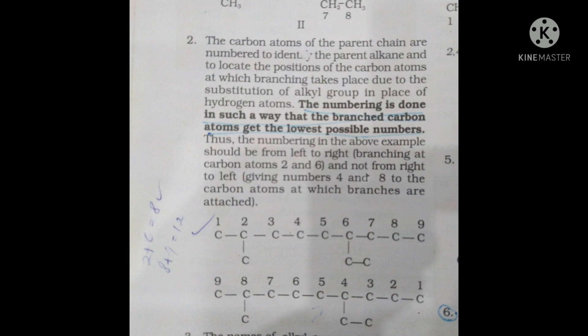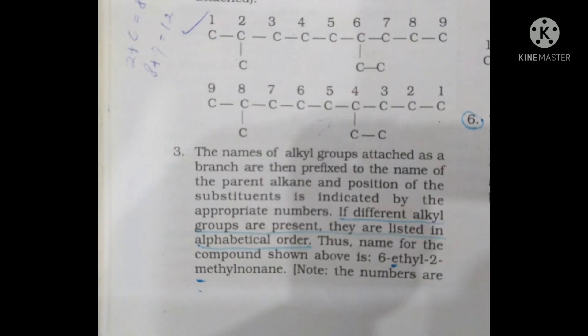We accept the lowest locant set for the branches. If two or more alkyl groups are branched, we compare positions such as 1,2 vs 2,3 and choose the set giving lower numbers. Then we use alphabetical order to name the substituents.